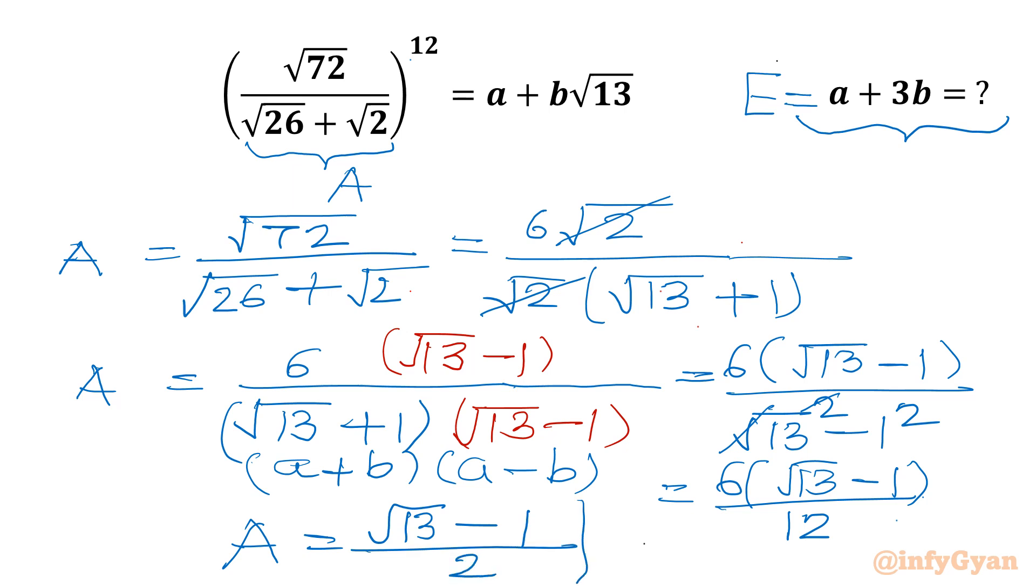This is the value of bracket after simplification. Now I have to find out power 12 of this. root 13 minus 1 over 2 whole power 12, and this is equal to a plus b square root 13. Now I can factorize 12. I will write root 13 minus 1 over 2, and whole power I can write 3 times 4.